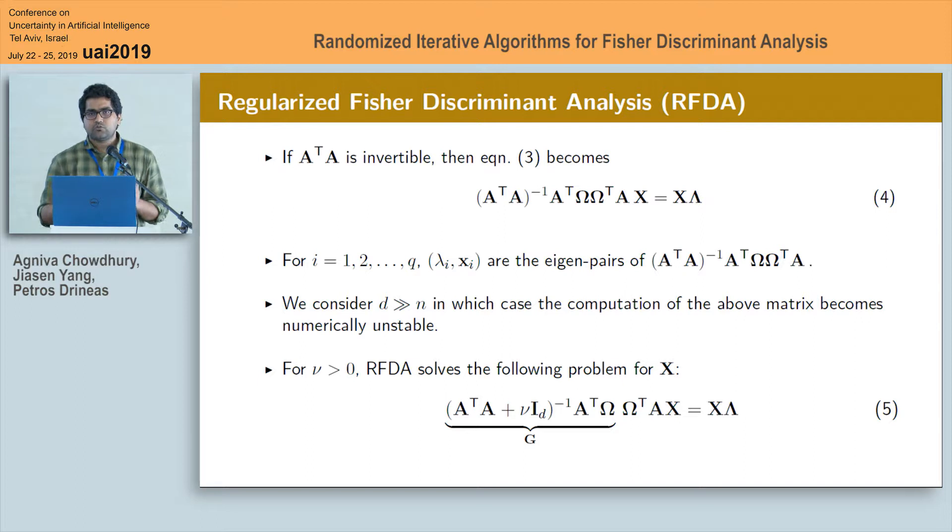However, in this work we typically consider the setting where D is much larger than N in which case the computation of the left-hand side of equation 4 becomes numerically unstable. A standard way to get around this is to solve the regularized version of this problem which is given in equation 5 and nu is called the regularization parameter.